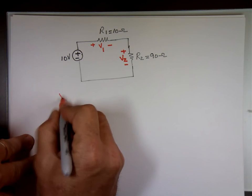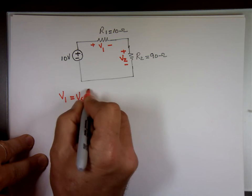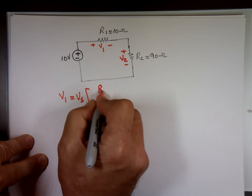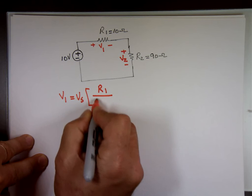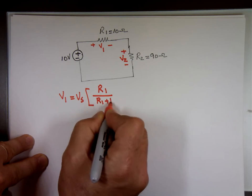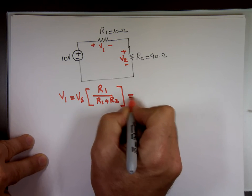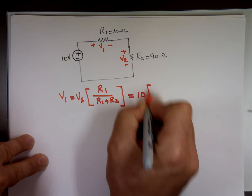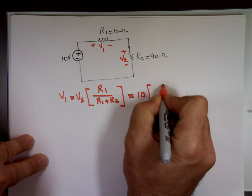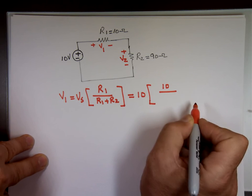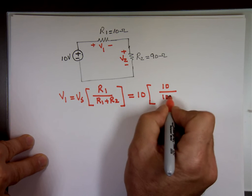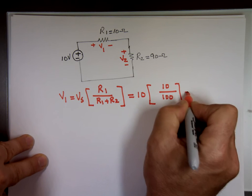V1, according to Ohm's law, it says take your source, multiply it by R1, because they have to match, over R1 plus R2. So my source here is 10, and what's R1? 10 over 100. And that gives me 1 volt.